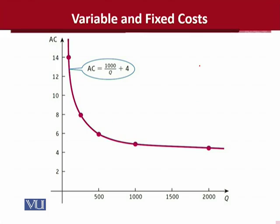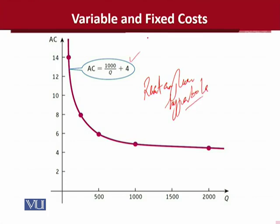अब हम बात करते हैं average cost की — दूसरा variable यही था जिसे हमने analyze किया था. इसकी shape ऐसी है जिसे हम rectangular hyperbola कहते हैं. यह इसकी equation थी जो हमने extract की थी, और अब हम इसको diagramatically observe करते हैं. It's a rectangular hyperbola — that is the shape of the average cost curve.